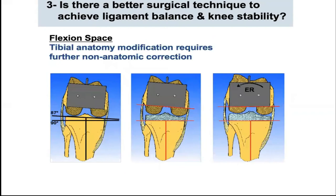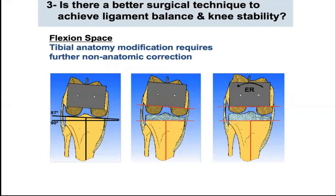Also, systematically cutting the proximal tibia perpendicular to its long axis, ignoring the patient's native anatomy, creates a trapezoidal flexion gap that requires further non-anatomical correction by externally rotating the femoral component and over-resecting the posterior medial condyle, which creates patellofemoral problems. We are trying to create a preset goal, which is the rectangular gap.